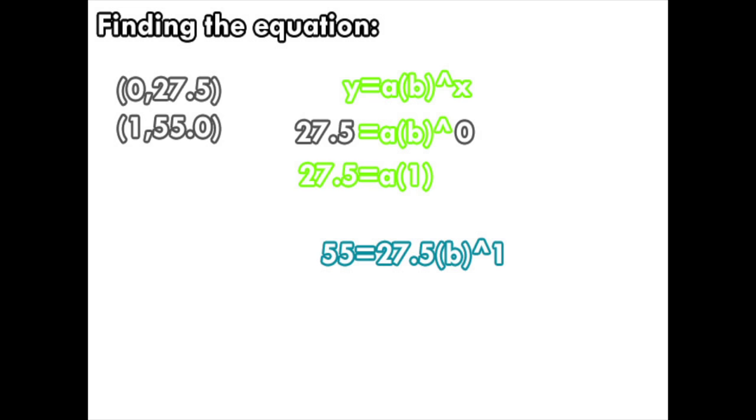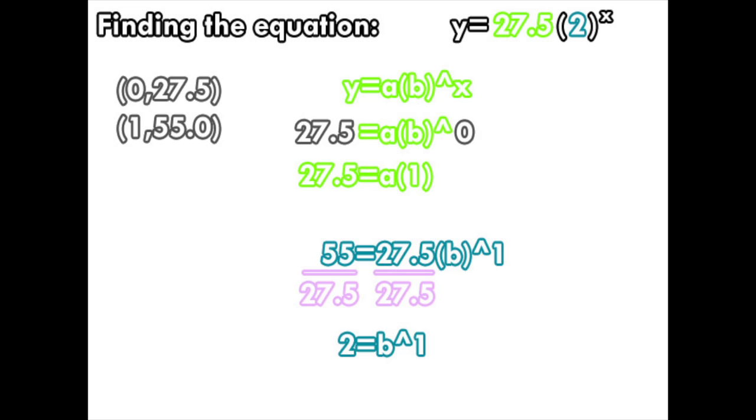Now plug in A and the second ordered pair. Now divide both sides by 27.5. Now both A and B have been identified. And just plug them in to get the equation.